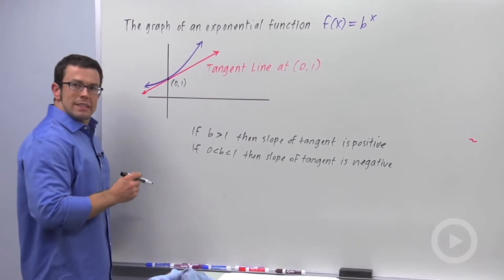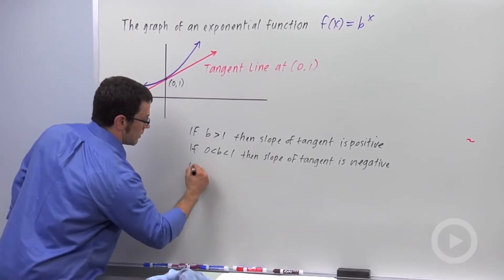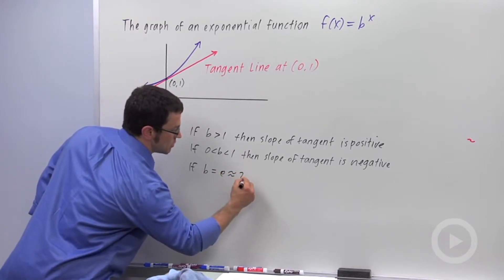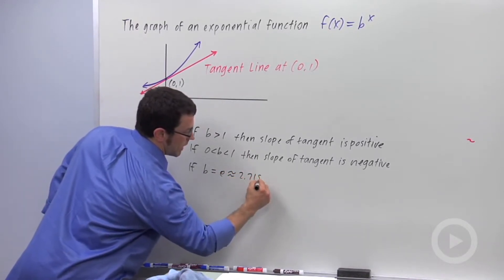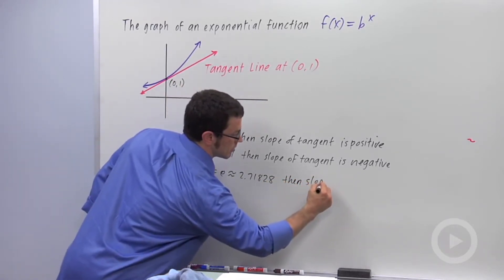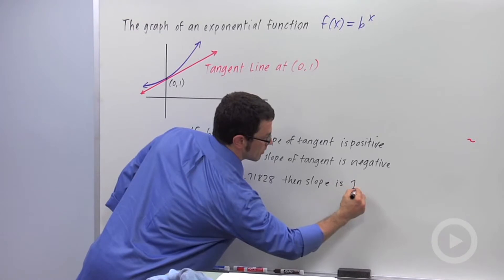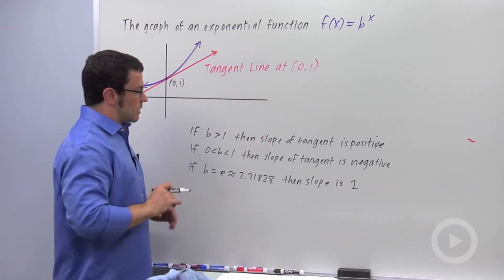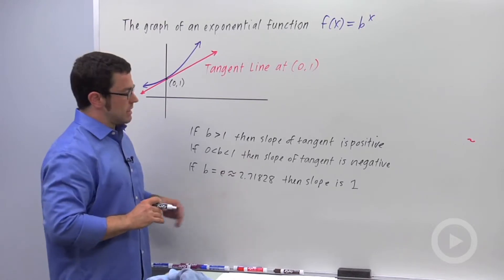If you want the slope to be exactly 1, you need b to equal e, and e is approximately 2.71828. So that is a little glimpse into what makes the number e special.